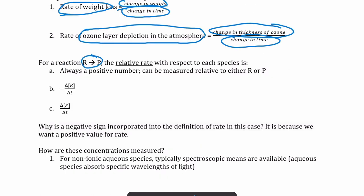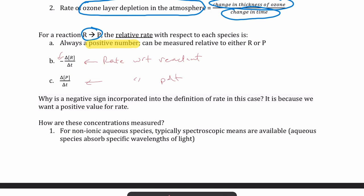If we're looking at a general reaction like reactant goes to product, we can express the relative rate with respect to each species using the following notation. The rate with respect to the reactant is written as the change in the reactant divided by the change in time. We want this rate to always be a positive number because concentration of the reactant decreases over time, so we add a negative sign in front of it. The rate with respect to the product is just the change in product concentration over the change in time — no negative sign needed, since products are increasing.